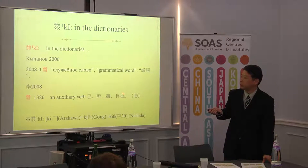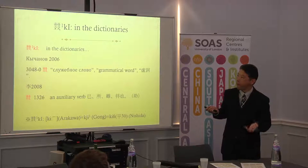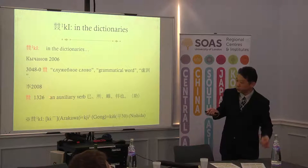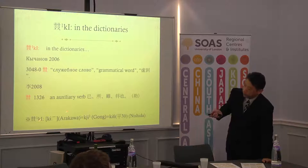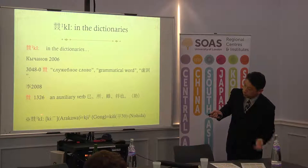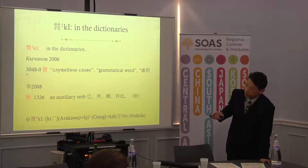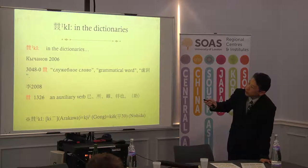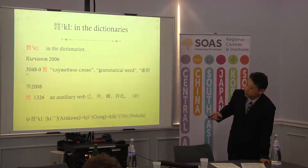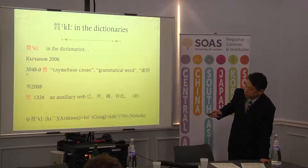From here, I use my previous reconstruction. The large initial — which means a neutral high value — is the same as Professor Gong's 'qi' and Professor Nishida's 'qi'.